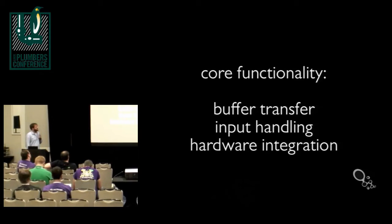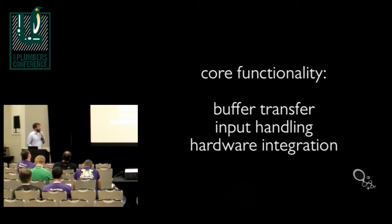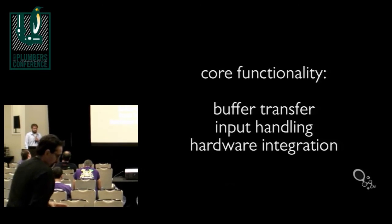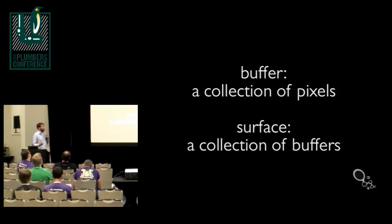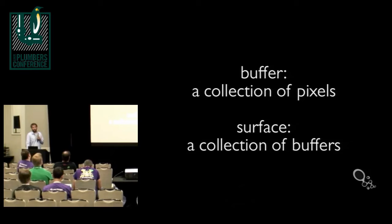At the core of Wayland, it's just about buffer transfer, input handling, and a very small amount of hardware integration. That is the core of the Wayland protocol — it's extremely simple and very straightforward to implement. A buffer is a collection of pixels, so it's your UI that you've rendered, your web page, one frame of a video. A surface is a collection of buffers, because typically you've got one frame being displayed and maybe one or two that you're in the process of rendering for later display. That is pretty much the entire core of Wayland — we tried to reduce it down to as small a problem space as we could.